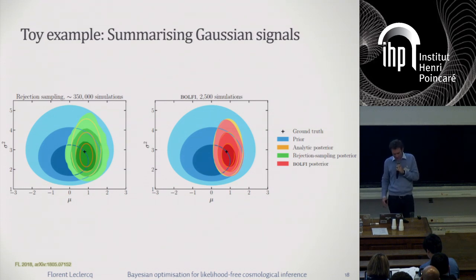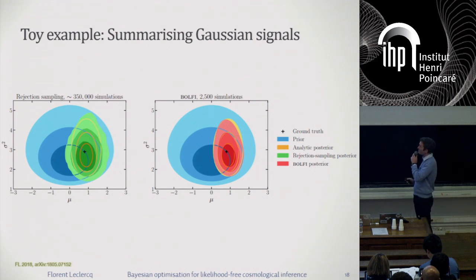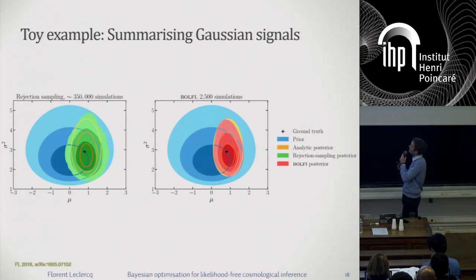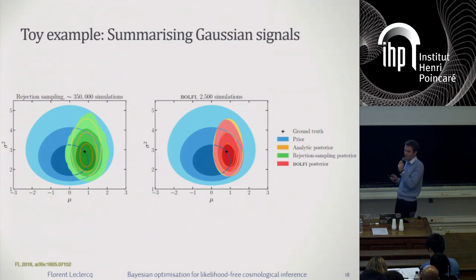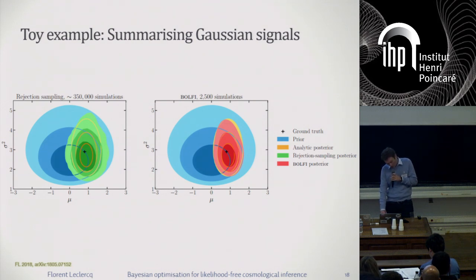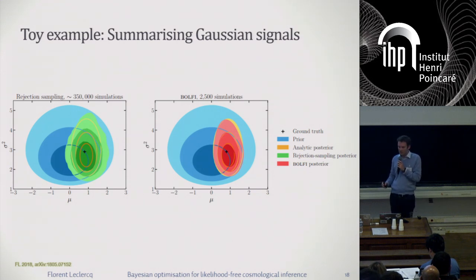The final inference results in parameter space — μ versus σ — show the prior in blue. Trying to get roughly the same number of accepted simulations with rejection sampling, I ended up with 350,000 simulations to produce the green contour, compared to the analytic solution in orange. With BOLFI with about 200 simulations — two orders of magnitude reduction — I get the posterior shown in red, which I would argue is a slightly better approximation of the final posterior. The key message is that the number of simulations when using Bayesian optimization is reduced by typically two to three orders of magnitude.